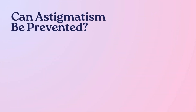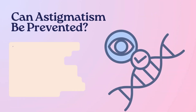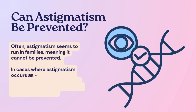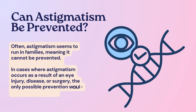Can astigmatism be prevented? Often astigmatism seems to run in families, meaning it cannot be prevented. In cases where astigmatism occurs as a result of an eye injury, disease, or surgery, the only possible prevention would be healthy eye care.